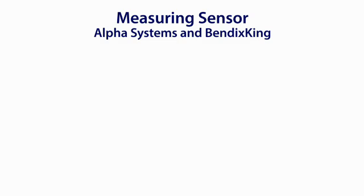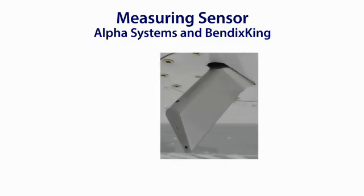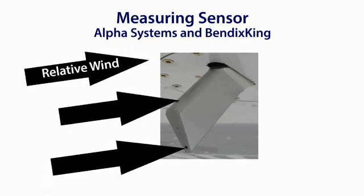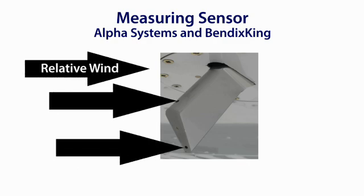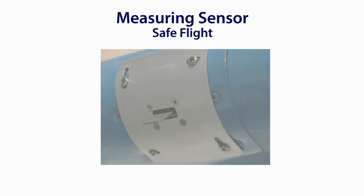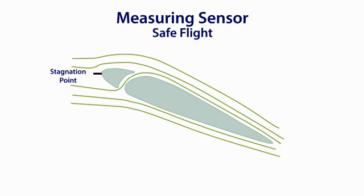The probe used in the Alpha Systems and Bendix King devices has two ports, each intaking RAM air and sending it to the processing unit. The processor then calculates the difference in RAM air pressure between the two ports to determine the direction of the relative wind. The Safe Flight device has a tab on the leading edge of the wing that is moved by the relative wind to sense the stagnation point, then sends this information to the cockpit display. While simple in theory, the precision and calibration of the device is what allows it to measure the direction of the relative wind.